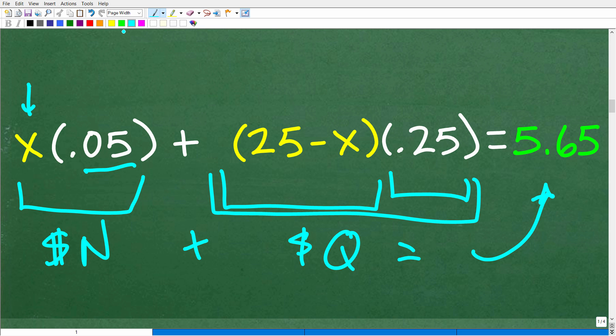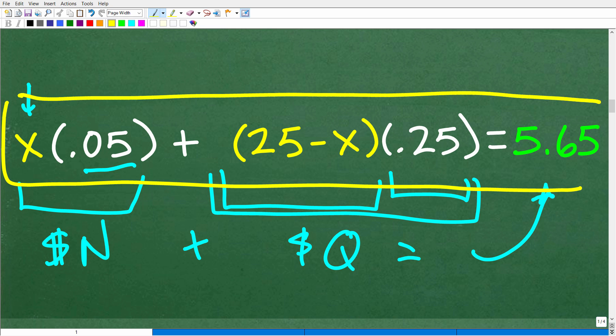So now we get to solve this lovely equation right here. So again, multiple steps to solve this problem. So we have x times 0.05 plus 25 minus x times 0.25 is equal to 5.65. You certainly want to use a calculator to help you out to solve this equation. And hopefully you know how to do that. So let's go ahead and get into how to solve this.